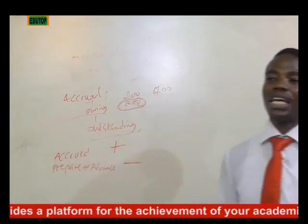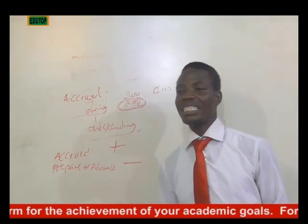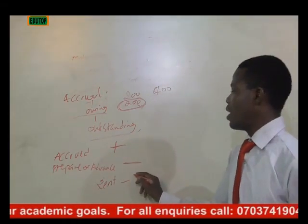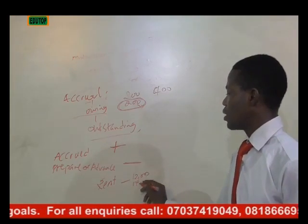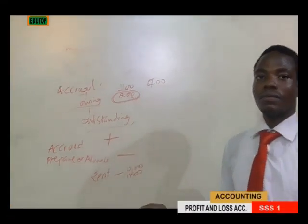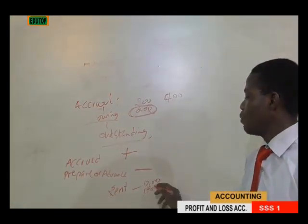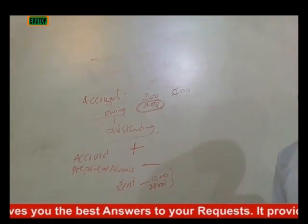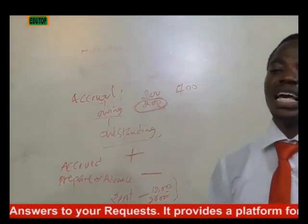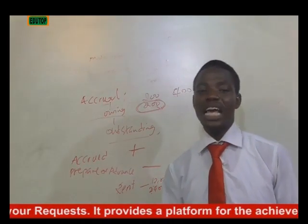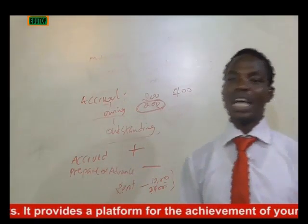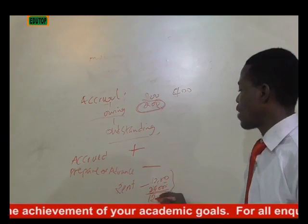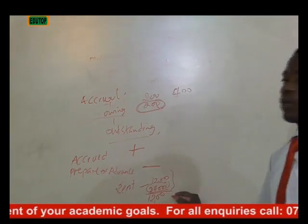For prepaid expenses, take rent as an example. You are supposed to pay 12,000 in a year but you pay 24,000 — that means you have paid for two years. Prepaid expenses are what you have paid for but have not yet enjoyed; it is the benefit that has been paid for but not yet received. That company is therefore owing you 12,000 because you paid more than you were supposed to.